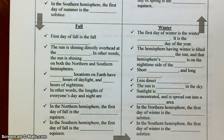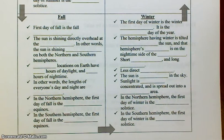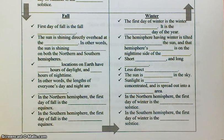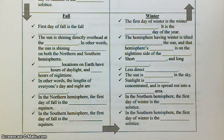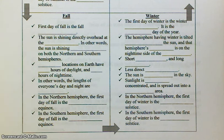After summer comes the season of fall. The first day of fall is the fall equinox. The sun is shining directly overhead at the equator — in other words, the sun is shining equally on both the northern and southern hemispheres. This is really important; a lot of you guys didn't get this. Pretty much all locations on Earth have 12 hours of daylight and 12 hours of nighttime during the fall equinox.